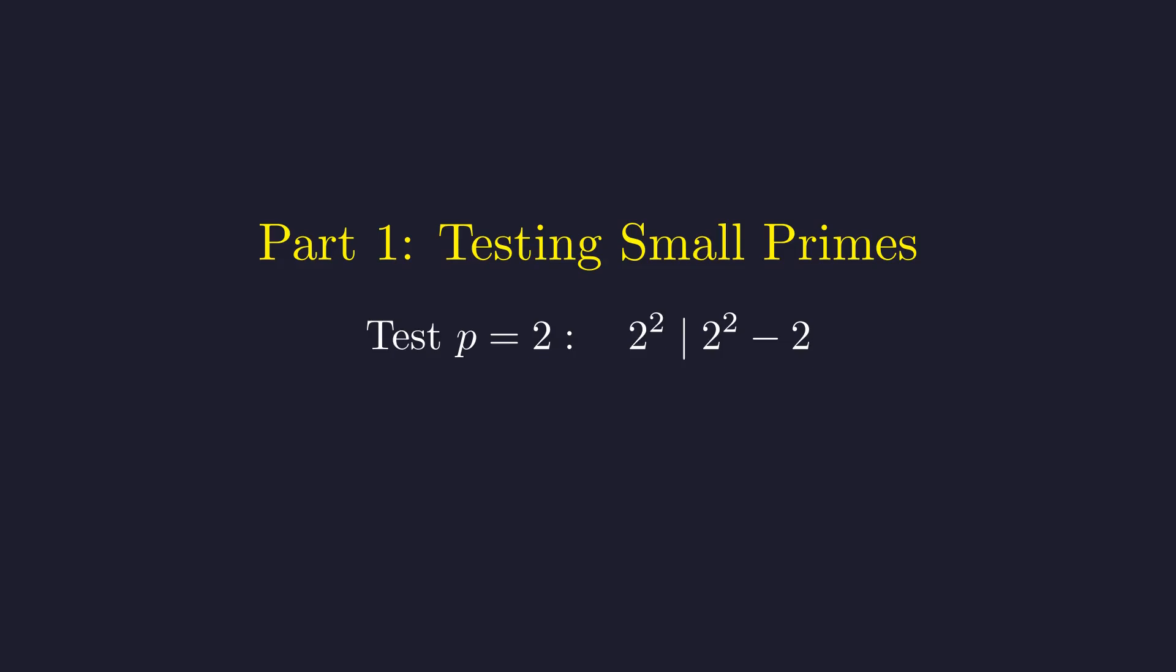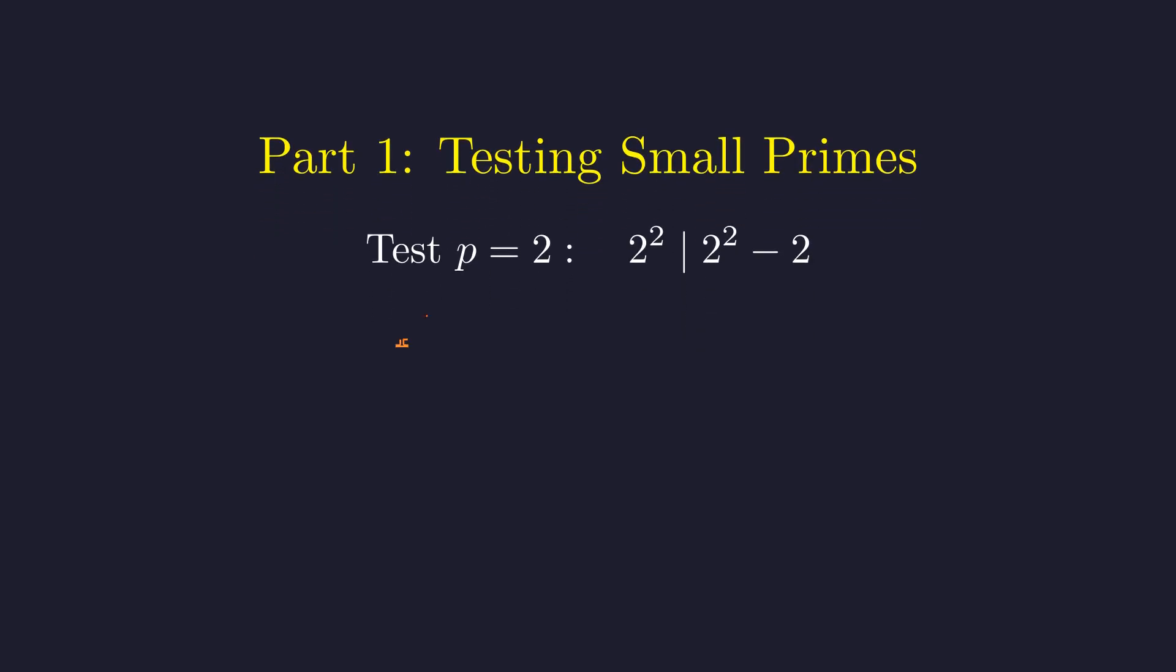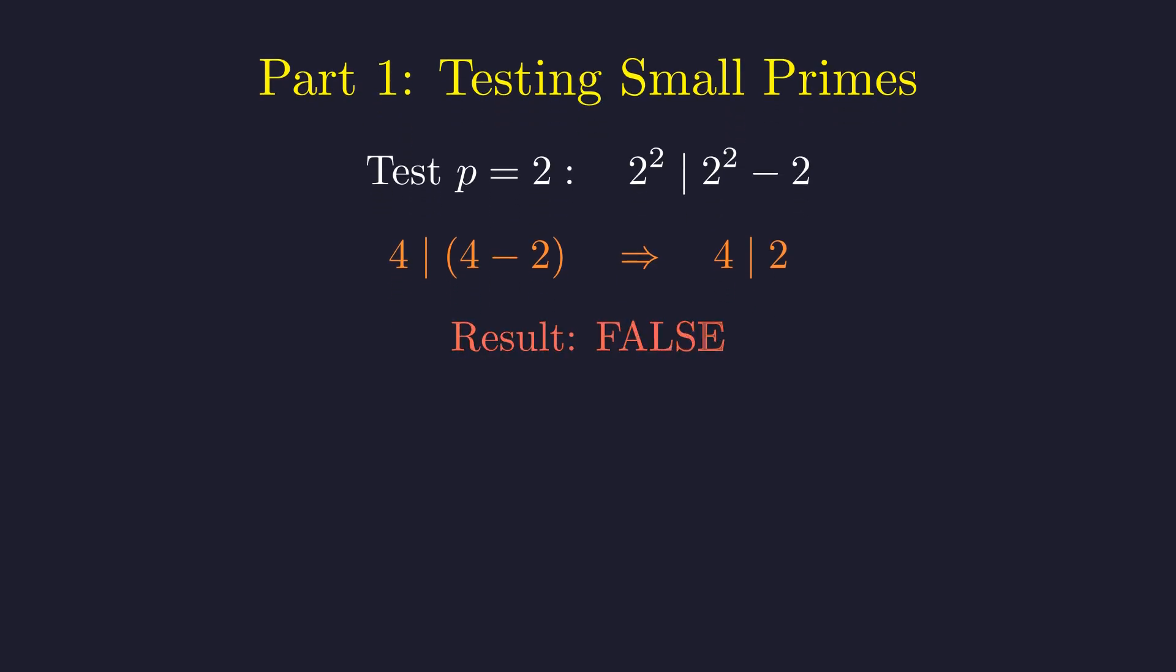Starting with the smallest prime, p equals 2. We need to check whether 4 divides 2 squared minus 2. Computing 2 squared gives us 4, so we're asking whether 4 divides 4 minus 2, which is 2. Since 4 does not divide 2, p equals 2 fails our test.